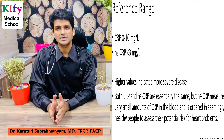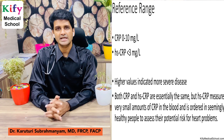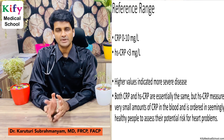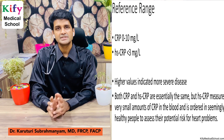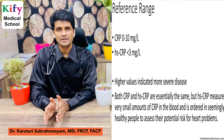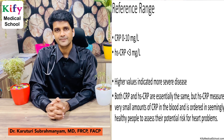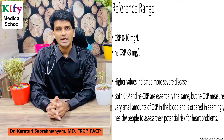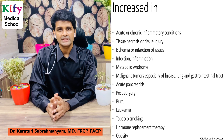The reference range for CRP is 0 to 10 milligrams per liter. For hs-CRP (high sensitivity CRP), it is less than 3 milligrams per milliliter — a higher value indicates more severe disease. Both CRP and hs-CRP measure essentially the same thing, but hs-CRP measures very small amounts of CRP in the blood and is used in seemingly healthy people to assess their potential risk of heart problems.